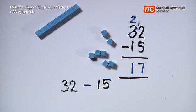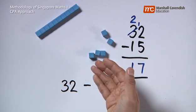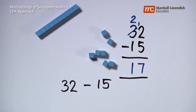The CPA approach allows children to understand something that is abstract, like an algorithm, via the use of concrete materials. In a textbook, there will be pictorial representation of the same experience. This is an example of the CPA approach using the topics of addition and subtraction.